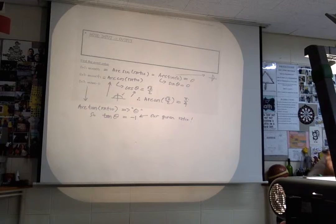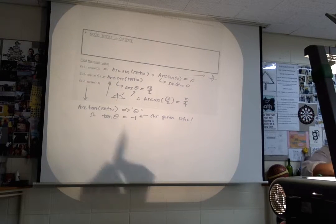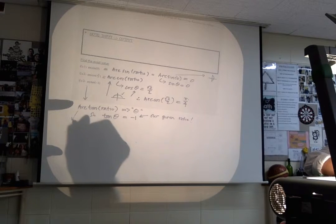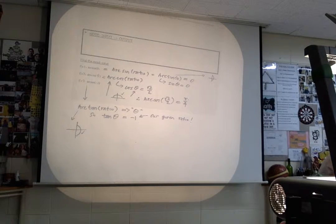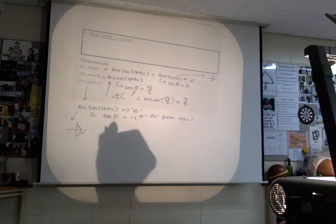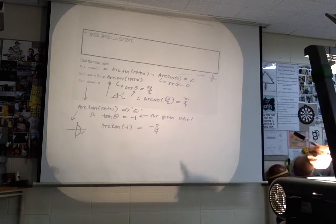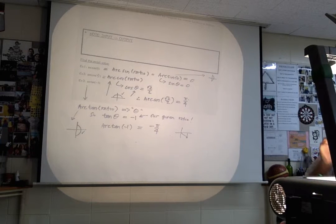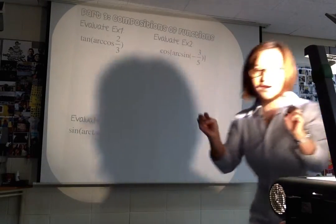Following the same pattern: arc tangent of a ratio gives me an angle, but that means tangent of this angle equals the ratio, which is negative one in our case. Arc tangent has a range of negative π/2 to π/2. Tangent is negative only in the fourth quadrant within that range, so arc tangent of negative one equals negative π/4. If you draw the triangle, tangent is negative one at negative π/4.